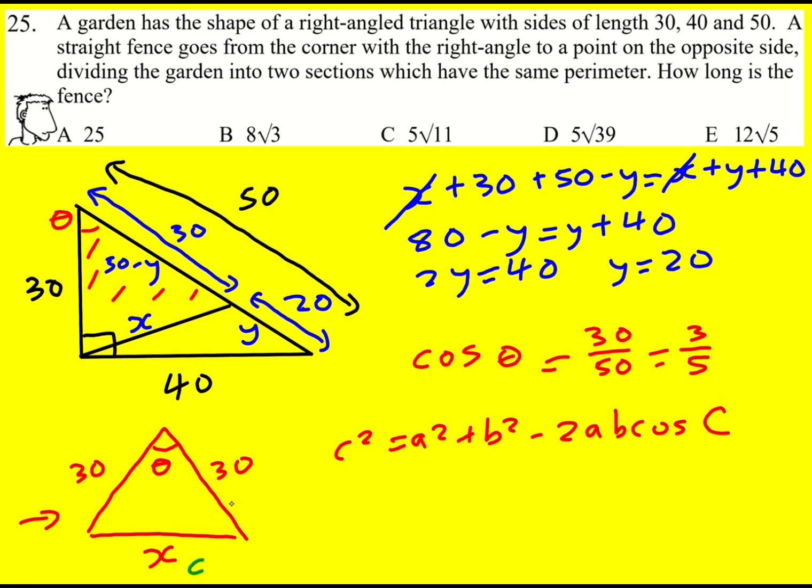So in my case this is going to be c. I don't know the angle but I know cos of the angle. And then this can be a and this can be b. So x squared will equal 30 squared plus 30 squared minus 2 lots of 30 times 30 times 3 over 5.